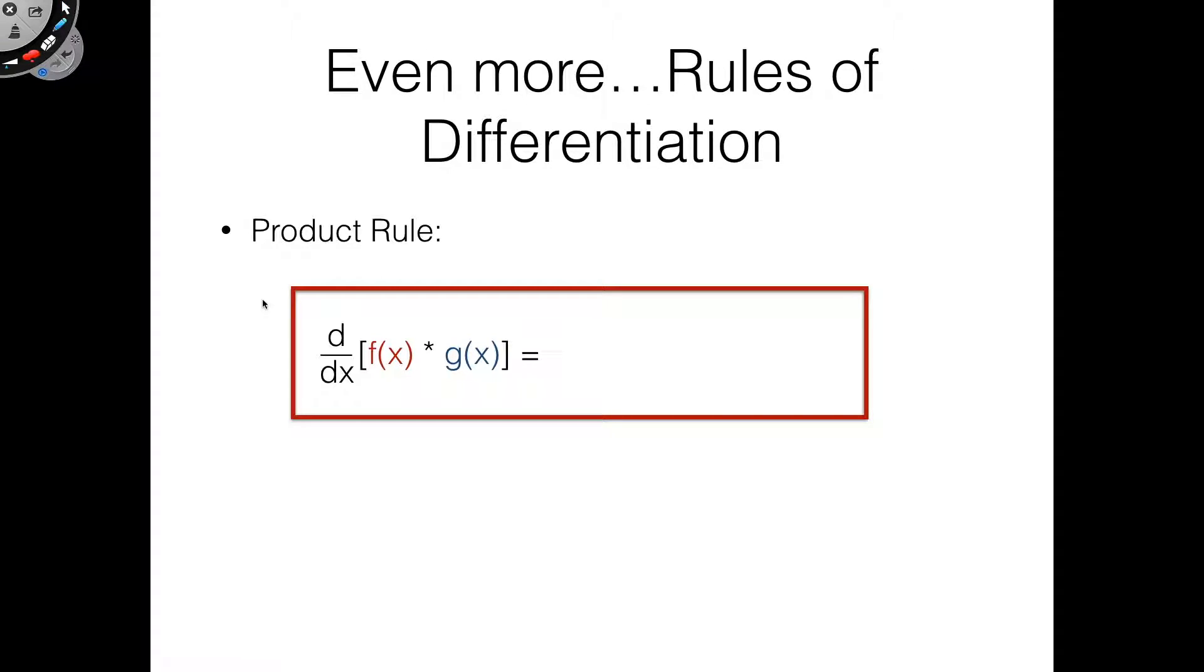So the product rule, the derivative of f(x) times g(x), is as follows: d/dx of f(x) times g(x) plus d/dx of g(x) times f(x). So that's our product rule right there. You may want to write this down because you're going to need to commit it to memory.